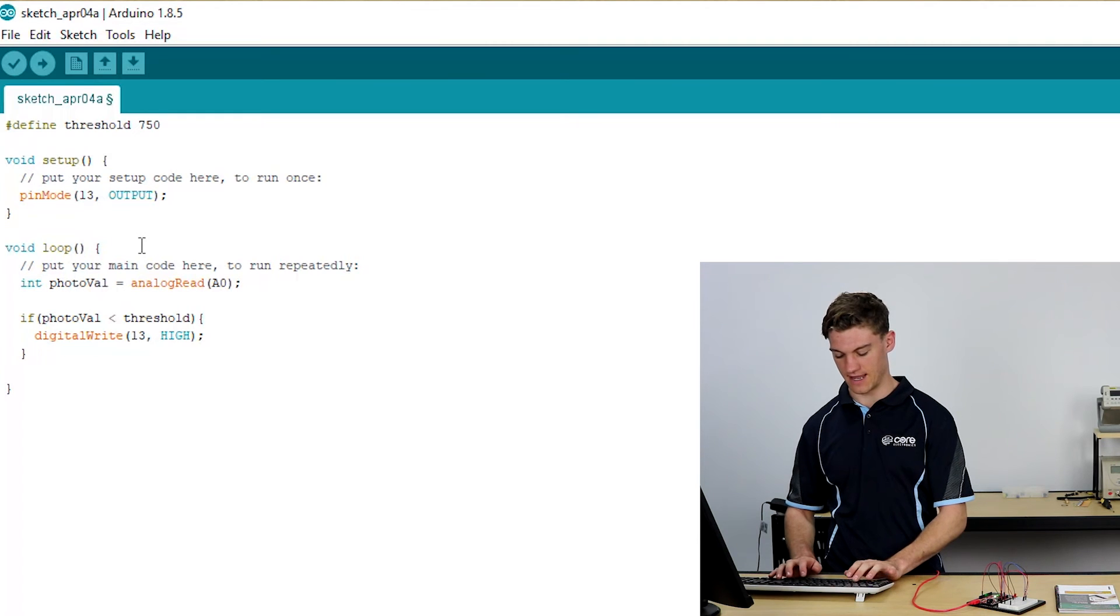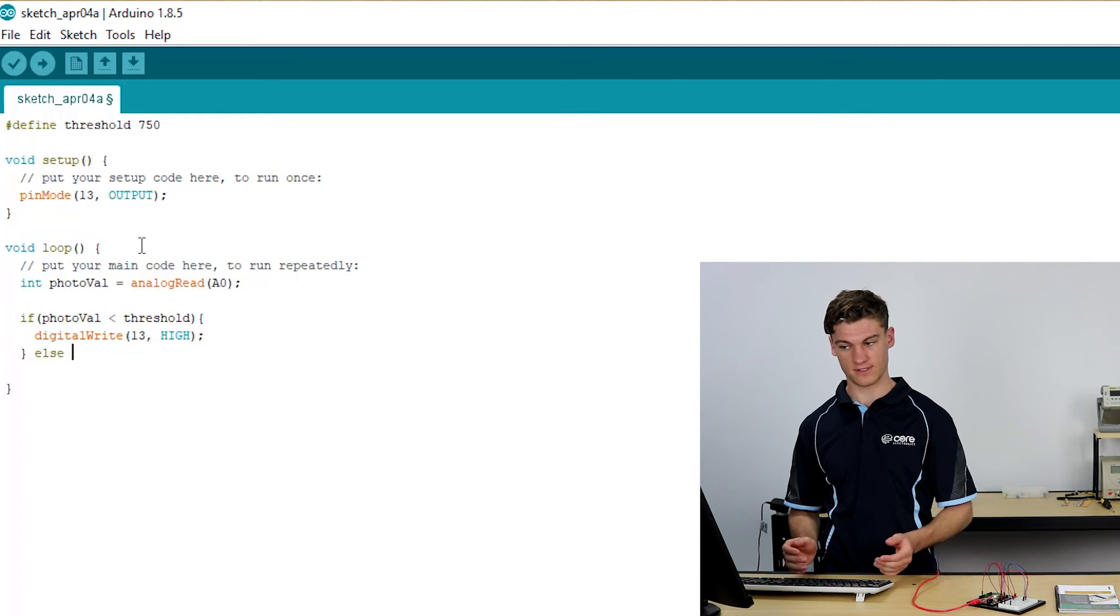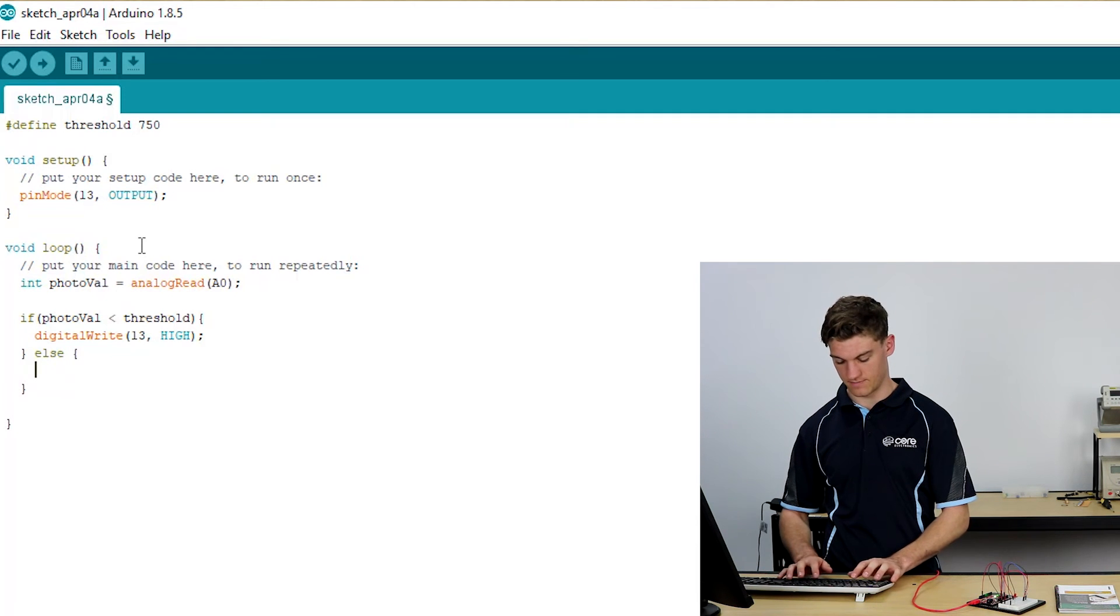Now we've got to write if it's light we want it be off. Else, so if this isn't true, then we're going to say digital write pin 13 low.